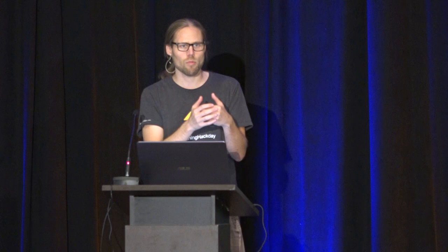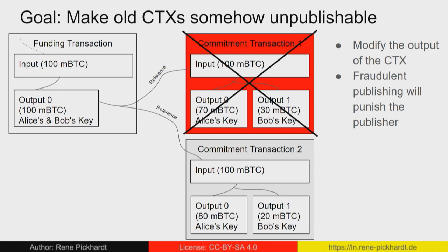What we do is modify the output of the commitment transaction slightly, such that a fraudulent publishing of this transaction will punish the person who publishes it. If Bob and Alice had the same commitment transaction, nobody on the network would know if Alice or Bob published the transaction. So each commitment transaction exists in two separate forms: one for Alice, one for Bob. They are different. The punishment works by giving the other party the ability to claim all funds of the payment channel.